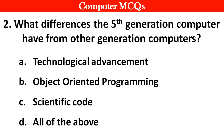Next question. What difference does the 5th generation's computer have from other generations' computers? Options A: Technological advancement, B: Object-oriented programming, C: Scientific code, D: All of the above. Right answer is option D: All of the above.